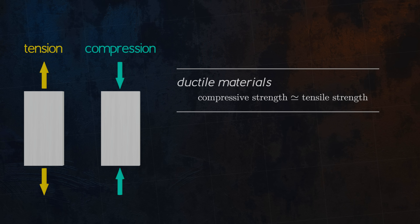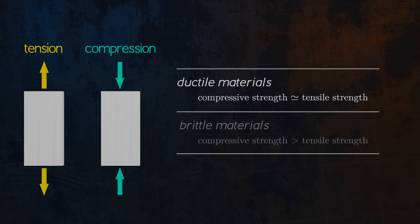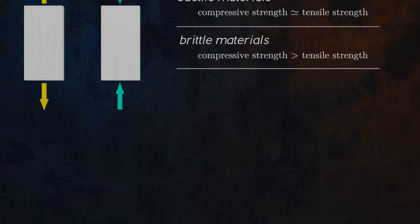For brittle materials like concrete and ceramics, however, the material strength is much larger in compression than in tension. I will talk about why this is the case later on in the video. First, let's look at some examples of strength values for a few different materials.